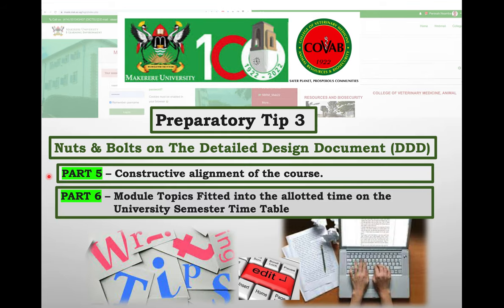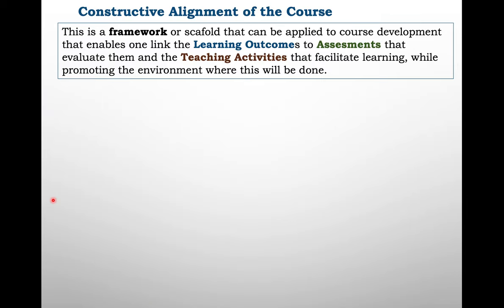Part five looks at the constructive alignment of the course, while part six looks at aligning the topics into the allotted time on the university semester timetable. Constructive alignment is a framework or scaffold applied to course development. It enables us to link the learning outcomes to the assessments that will evaluate those outcomes, and to the teaching activities that will deliver them, while promoting an environment under which the learning will be done.